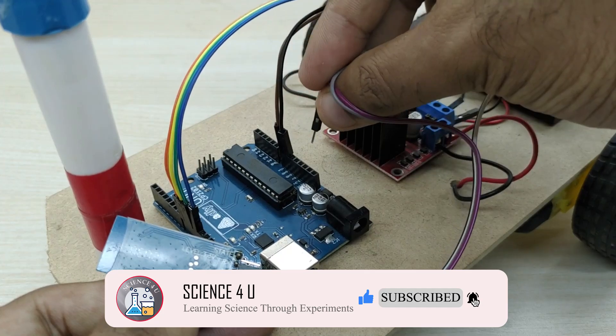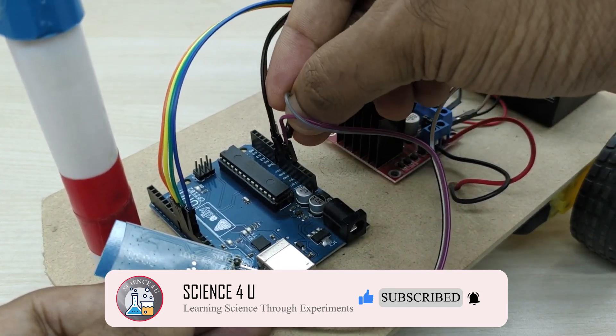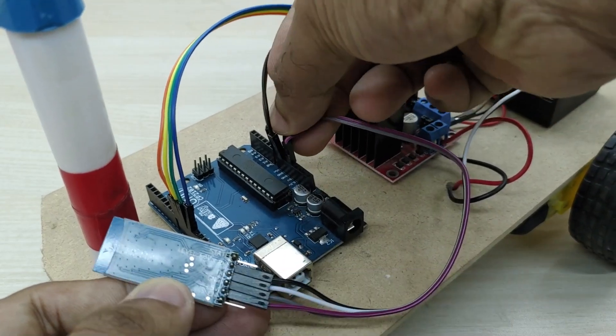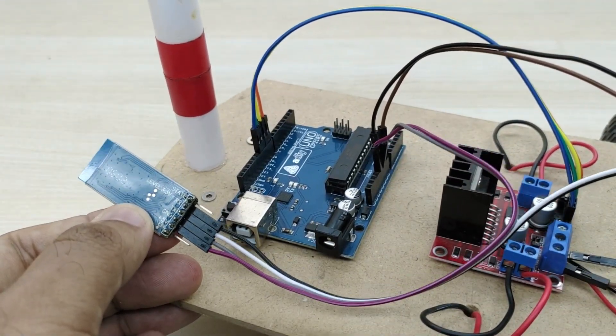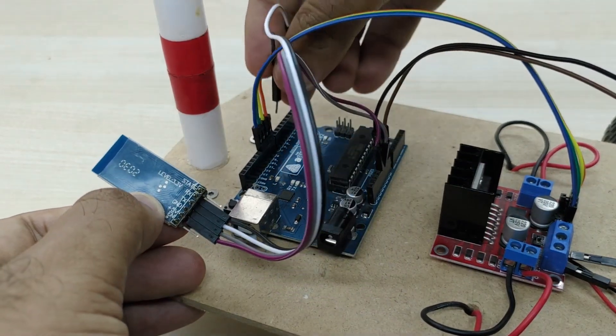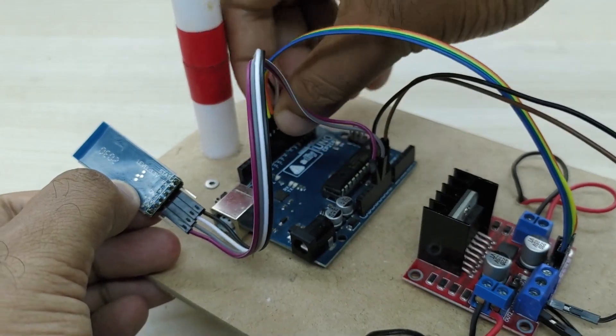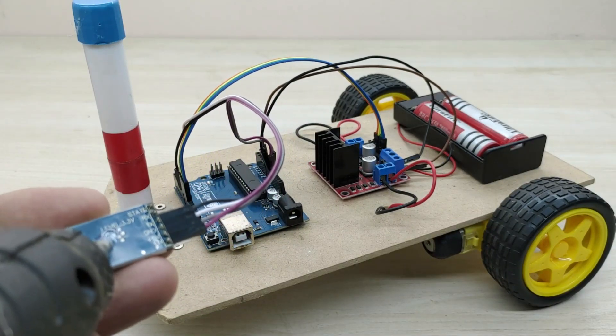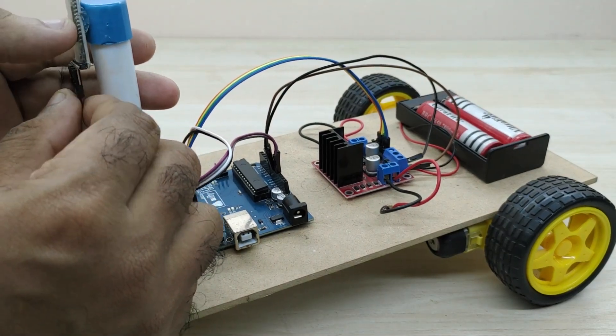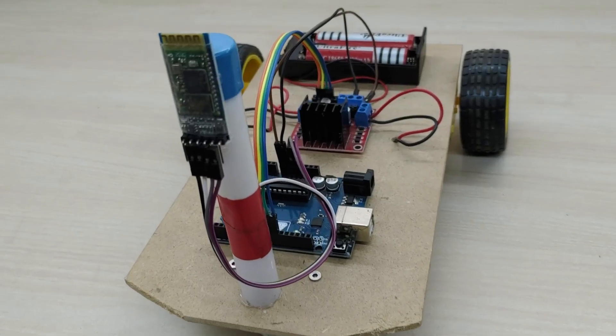Connect the VCC pin of Bluetooth module to plus 5 volt pin of Arduino and ground pin of Bluetooth module to ground pin of Arduino. Also, connect the RX pin of the Bluetooth module to pin number 6 of Arduino and TX pin of Bluetooth module to pin number 7 of Arduino. Fix the Bluetooth module on top of the plastic pipe for better signal reception. The connections are complete.